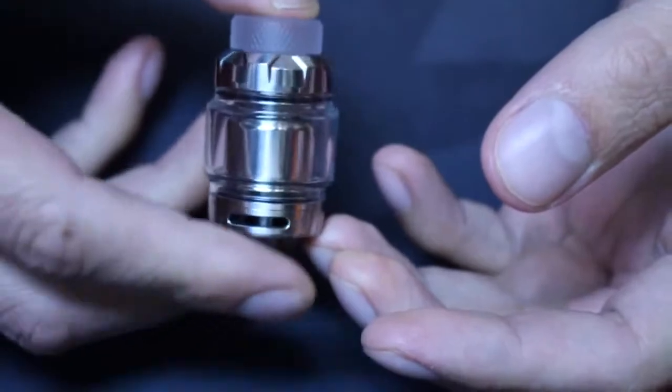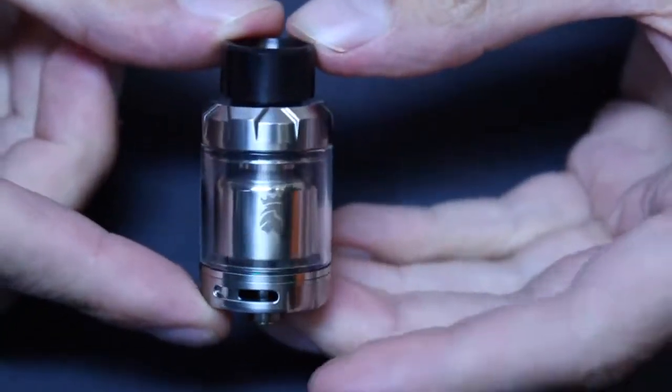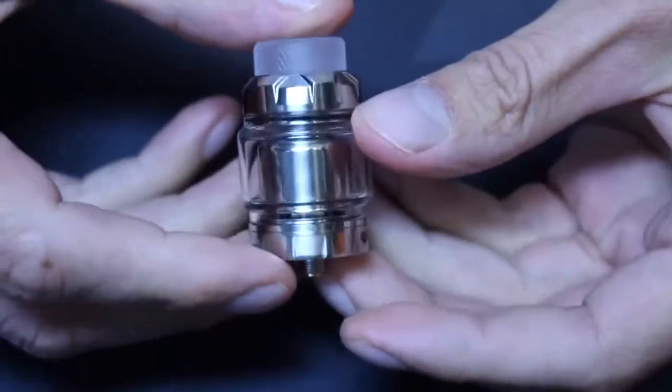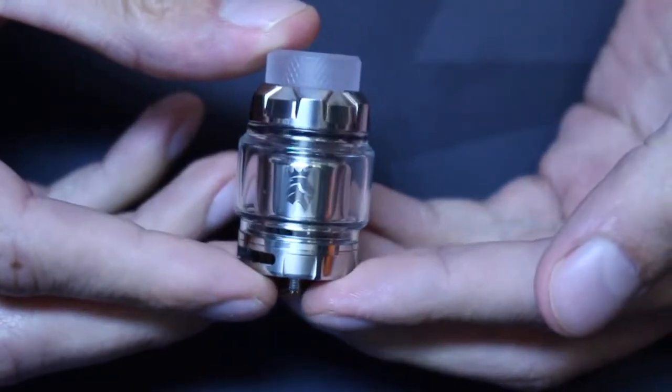You can use either the pre-installed bubble glass or the straight glass tube, depending on how you want it to look or how much e-juice you want it to hold. It's also really short, and that was one of the things that Tony set out to do with this. He wanted it as short as he could get it. So overall, I think it looks nice.